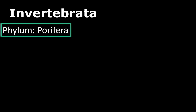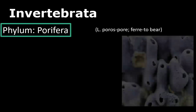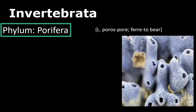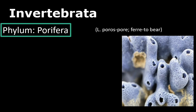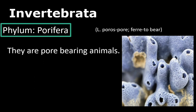Let us start with the phylum Porifera. Pori means pore or openings, and phera means bear or having. These animals have small holes on the body. They are pore-bearing animals commonly called as sponges.